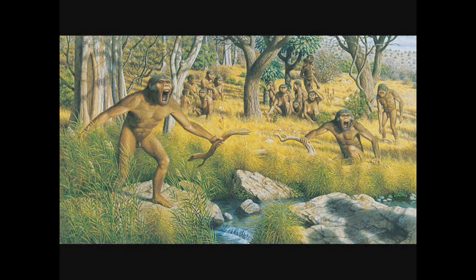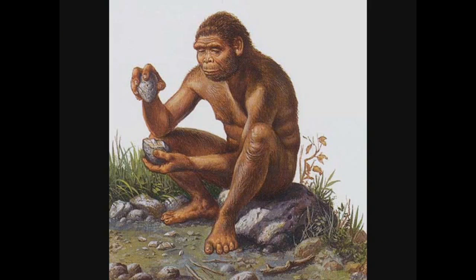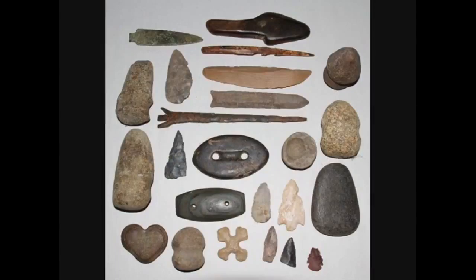Australopithecus then evolved into more distinctly human-like forms called Homo habilis, about 2.5 million years ago. Cranial capacity was 700 cc, and slim bones resembled those of modern men. They used tools and weapons.